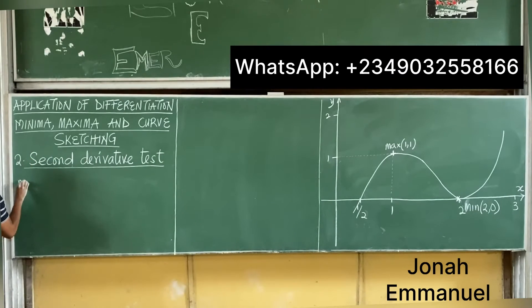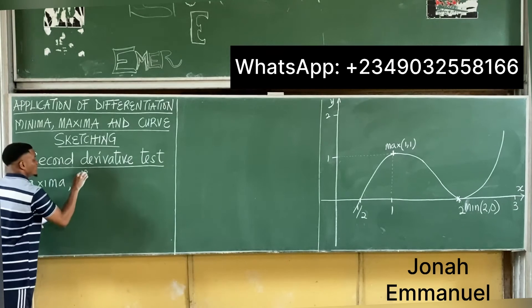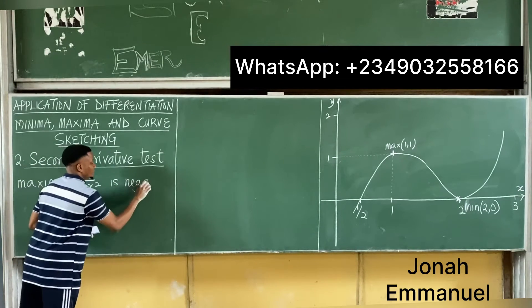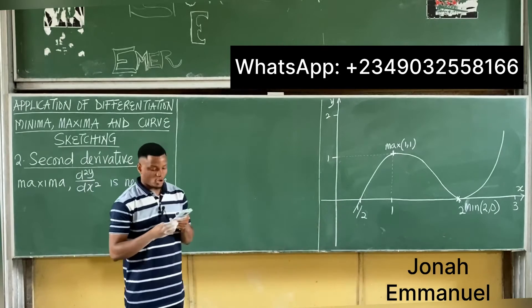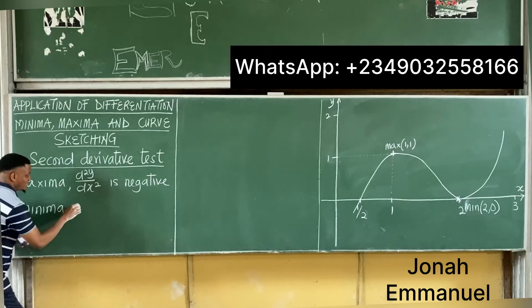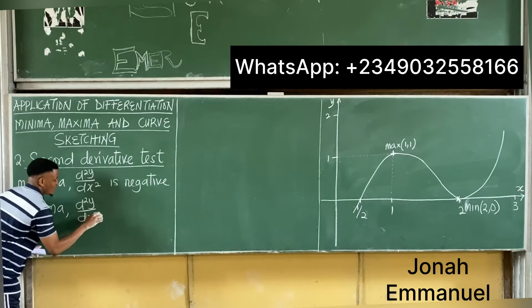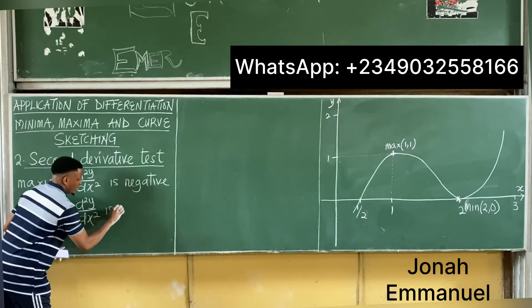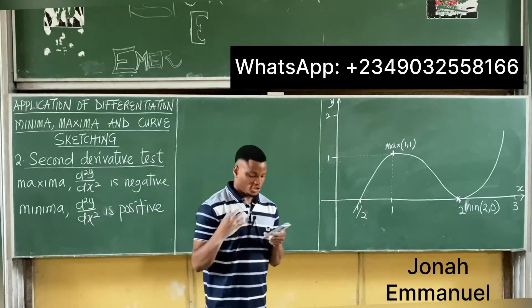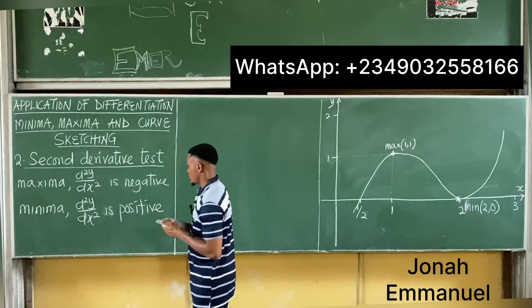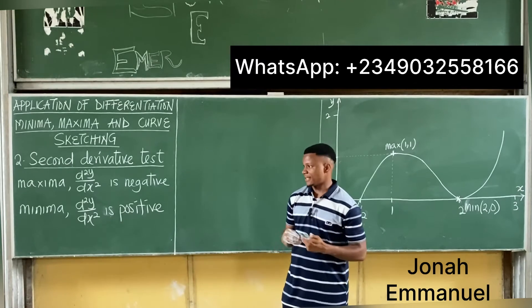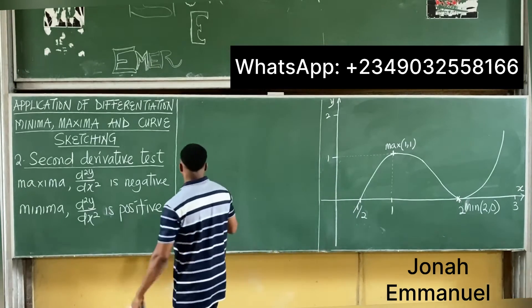For maxima, d²y/dx² is negative. For minima, d²y/dx² is positive. Also, a turning point is called a point of inflection if d²y/dx² changes sign.